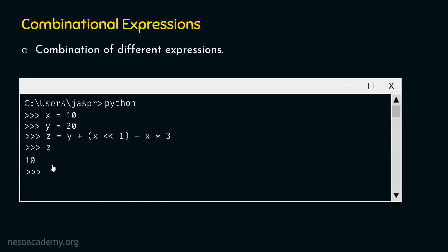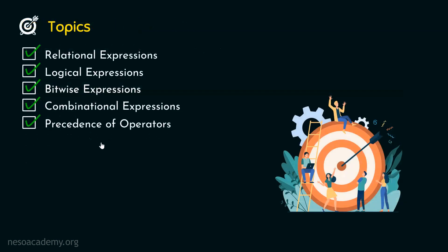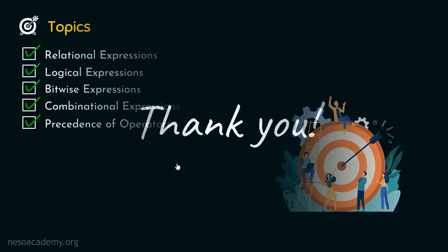This is all we need to understand about combinational expressions. Now we know how to use operator precedence to solve these complicated-looking expressions. We have covered relational expressions, logical expressions, bitwise expressions, combinational expressions, and the precedence of all operators in Python. Thank you for watching — I'll see you in the next presentation.